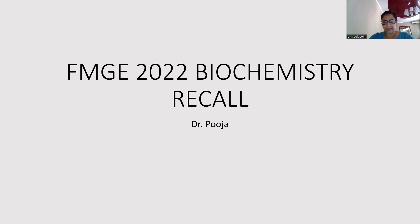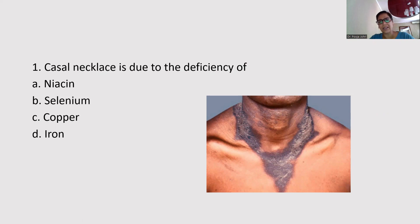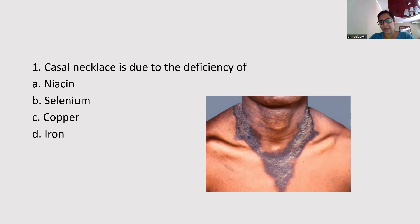The first question was: Casal's necklace is due to the deficiency of — and this question has been asked in exams in so many different ways. Other questions can also be framed from this. The options are niacin, selenium, copper, and iron.